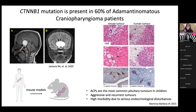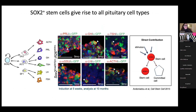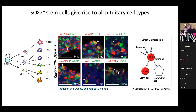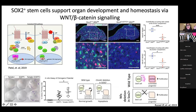What about Wnt signaling in development? Going back to pituitary development, our group has shown that all pituitary cells derive from a stem cell expressing SOX2. The SOX2 cells not only give rise to all differentiated cells of the pituitary during development - a proportion of stem cells remains present in the postnatal pituitary, contributing to pituitary turnover by self-renewing and giving rise to differentiated cells in the adult.